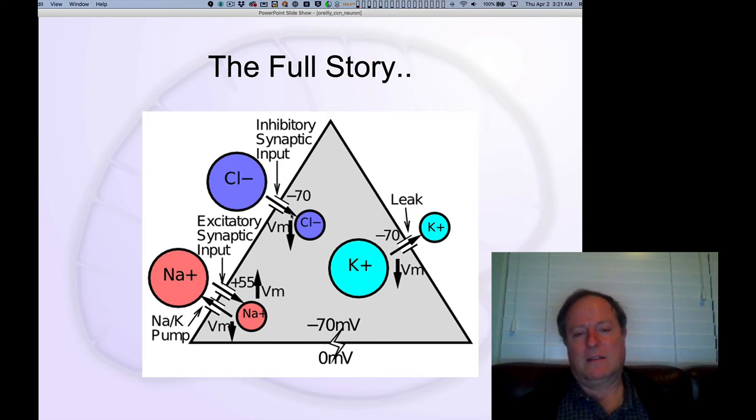The chloride ions have a negative charge. And because they have a negative charge, they're getting pushed out by the negative charge inside the cell. So the electrical potential causes a corresponding concentration imbalance, driving those negative charges out of the cell.